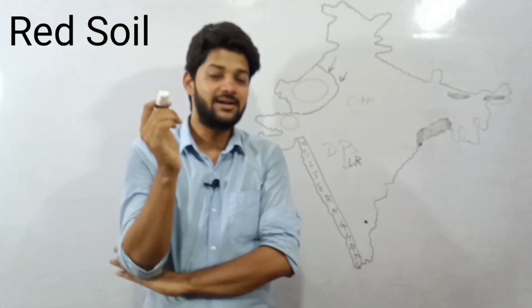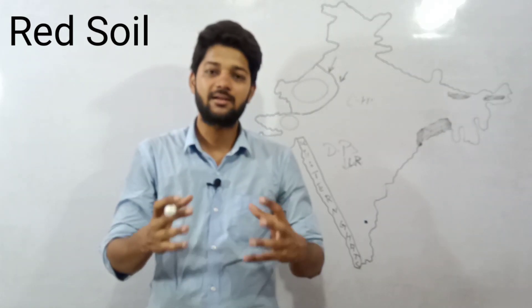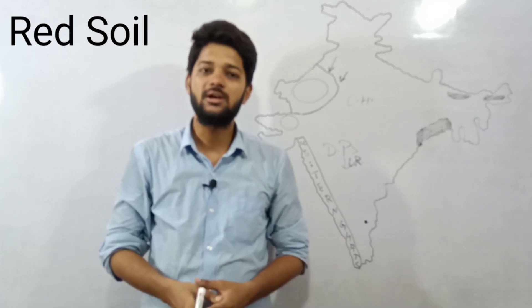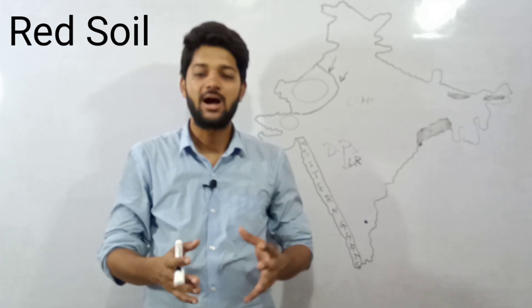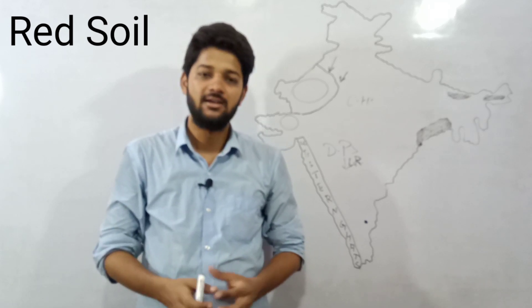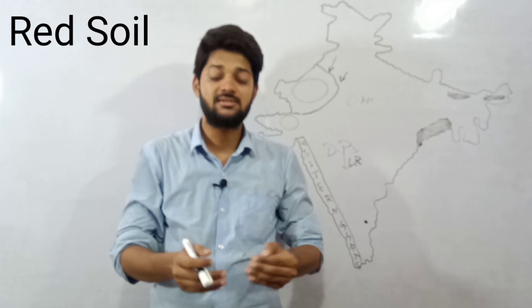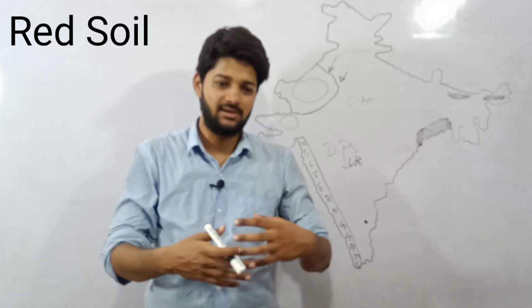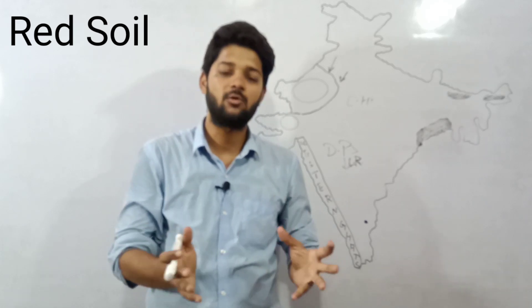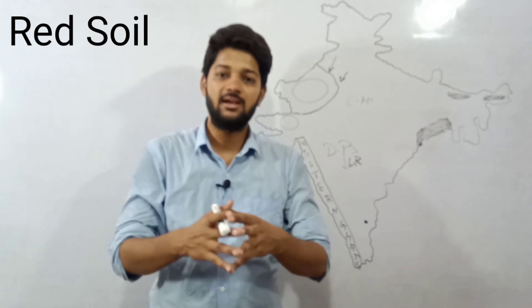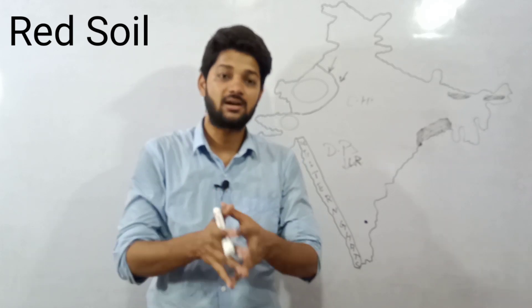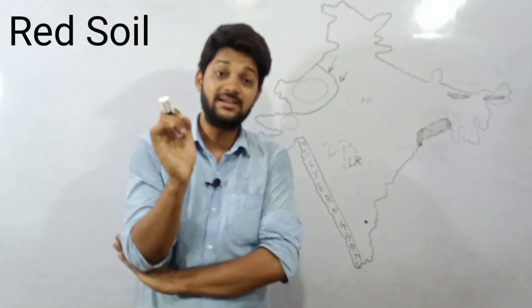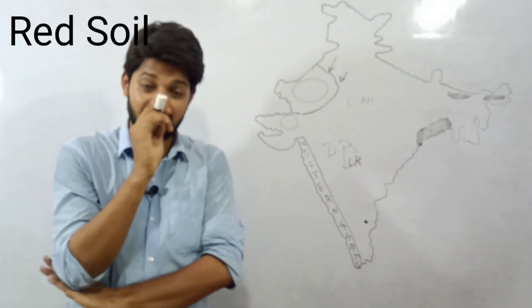The last and very special point in red soil is about why the color of this soil is red. It is due to the diffusion of iron oxide — the presence of iron oxide and the spread of iron gives this soil its red appearance. And sometimes it also appears yellow in colour.